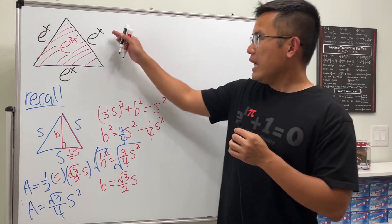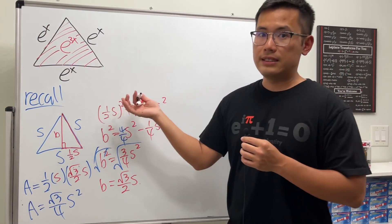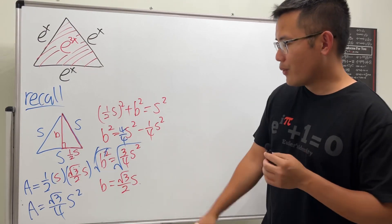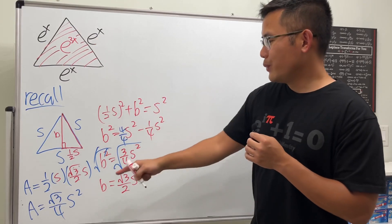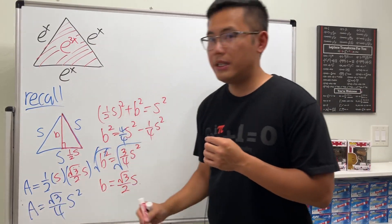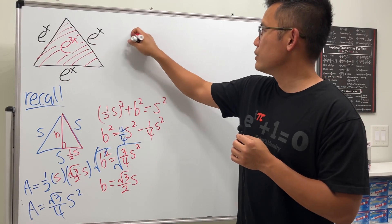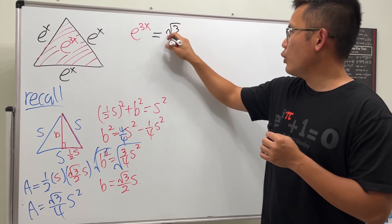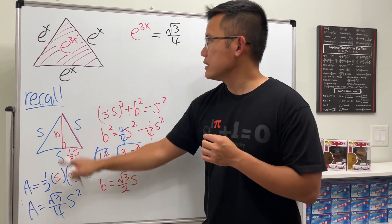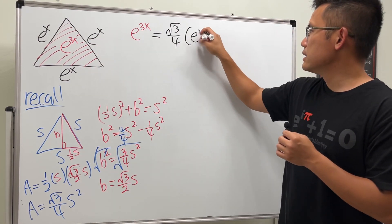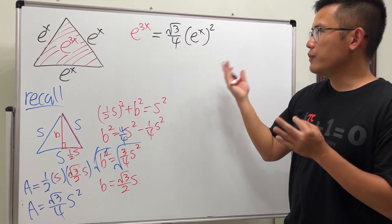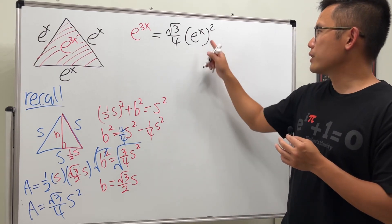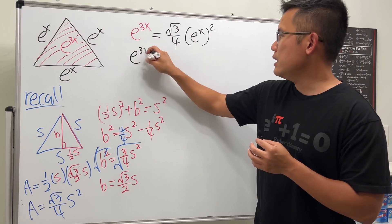Getting back to the problem: s = e^x, and we want the area to equal e^(3x). So we set e^(3x) = (√3/4) · (e^x)². Working that out, (e^x)² = e^(2x), so we have e^(3x) = (√3/4) · e^(2x). Hopefully this is true for some value of x.